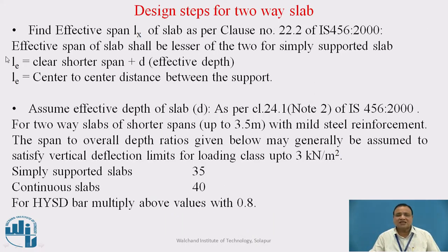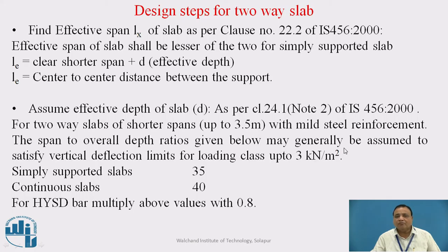Design steps for two-way slab. Step 1: Find the effective span Lx as per clause 22.2 of IS 456-2000. The effective span is the smaller of: clear shorter span plus effective depth, or center-to-center distance between supports in the shorter direction. Step 2: Assume effective depth of slab d as per clause 24.1 note 2 of IS 456-2000. For two-way slabs with shorter span up to 3.5 m with mild steel reinforcement, the span-to-overall-depth ratios are: simply supported slabs = 35, continuous slabs = 40. For HYSD bars, multiply these values by 0.8.